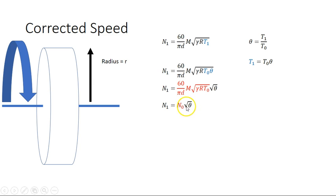And we just want to rearrange that to have this to one side. So what is the corrected speed? If I want to convert this speed to what it would be like at sea level conditions, then I just divide it by the square root of theta. So that is the corrected speed. I hope you find that useful.